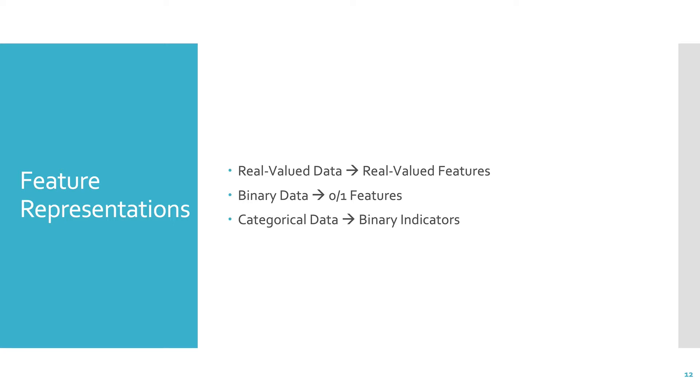Real value data goes to real value features. So real value features can be represented as is. Each feature can be represented using its real value, and each sample can be represented as a vector of real values. Binary data goes to 0, 1, or negative 1, 1 features, and categorical data becomes binary indicator features.